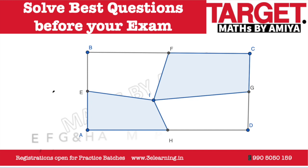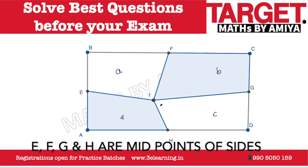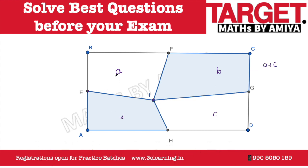Now let's check the concept first. Whenever you have any quadrilateral — be it a parallelogram, rectangle, or anything — say the four regions are area A, area B, area C, and area D. According to the midpoint area theorem of a quadrilateral, A plus C equals B plus D, and each is equal to half of the total area of the quadrilateral ABCD. This is the complete concept of midpoint area.